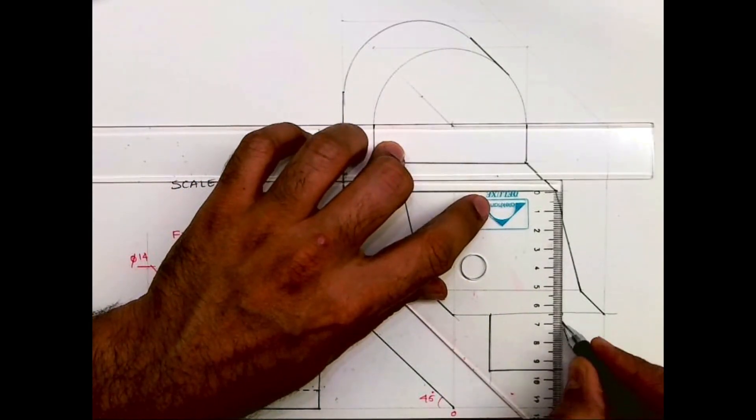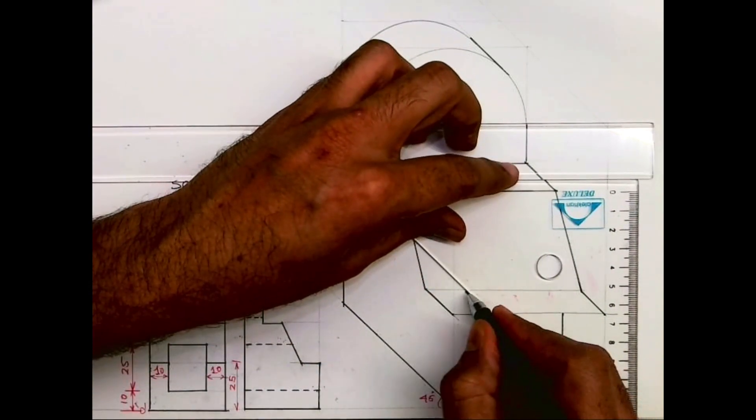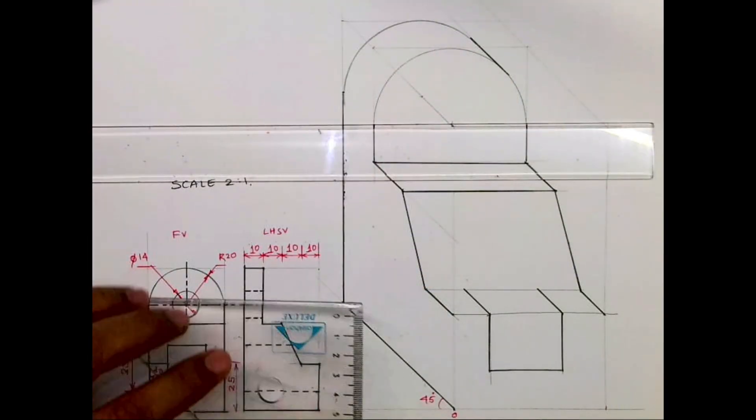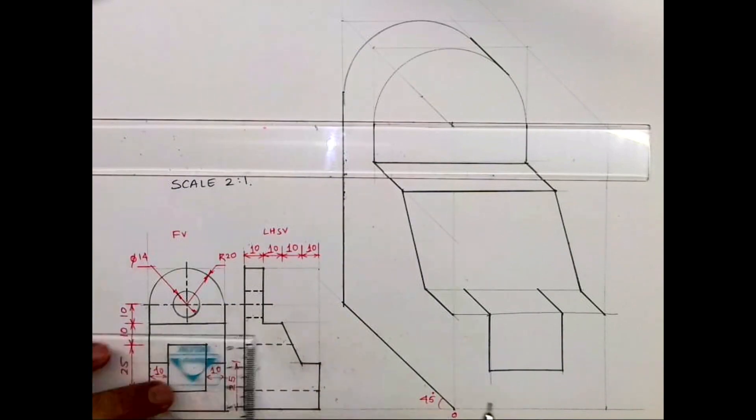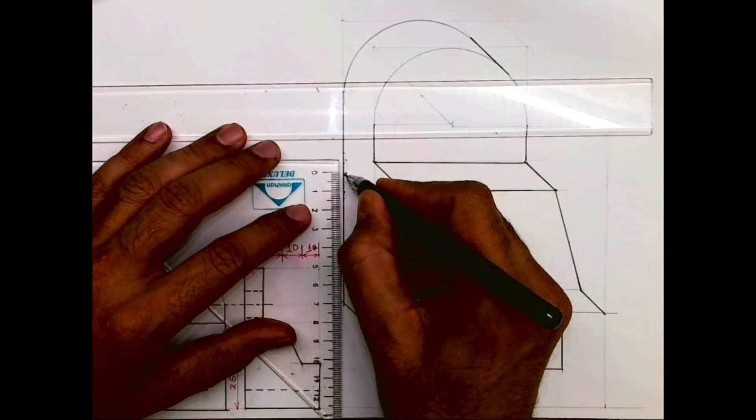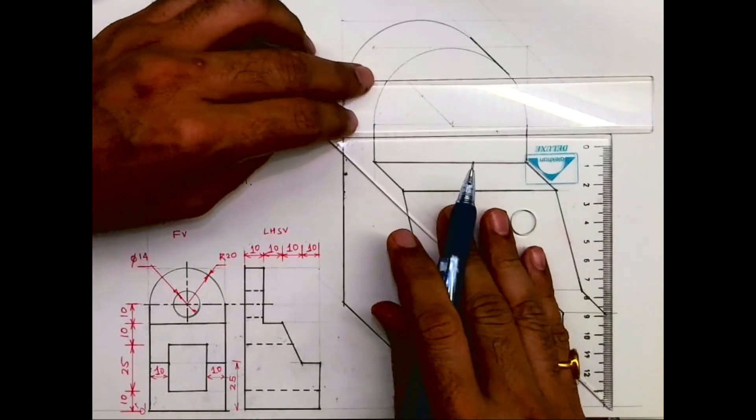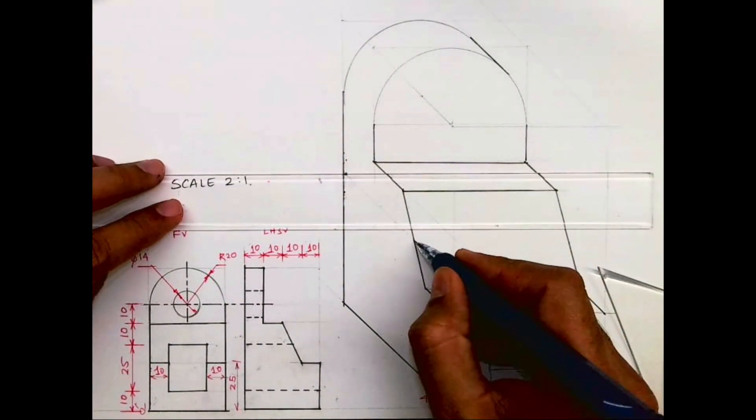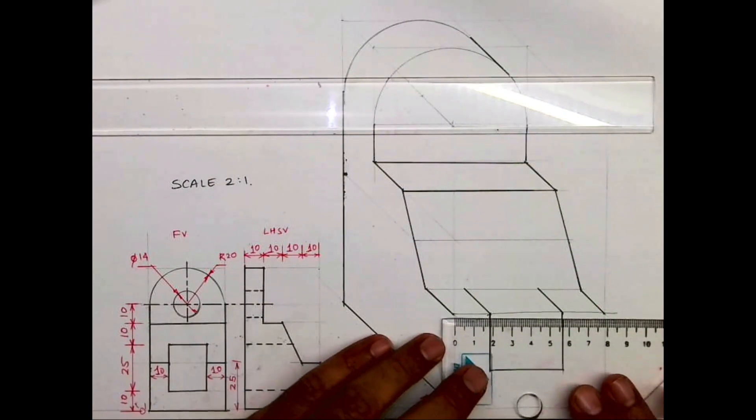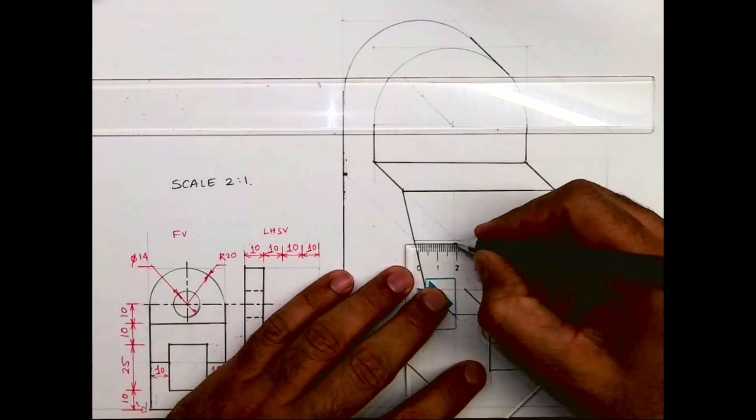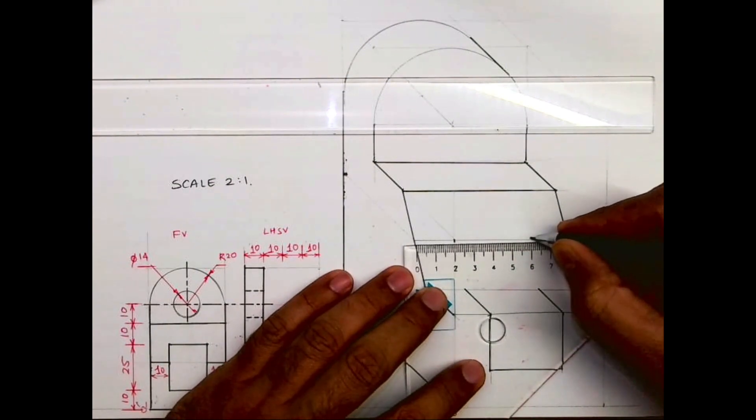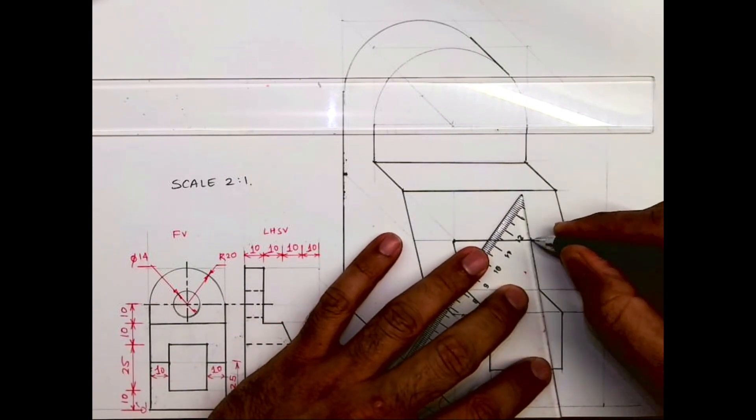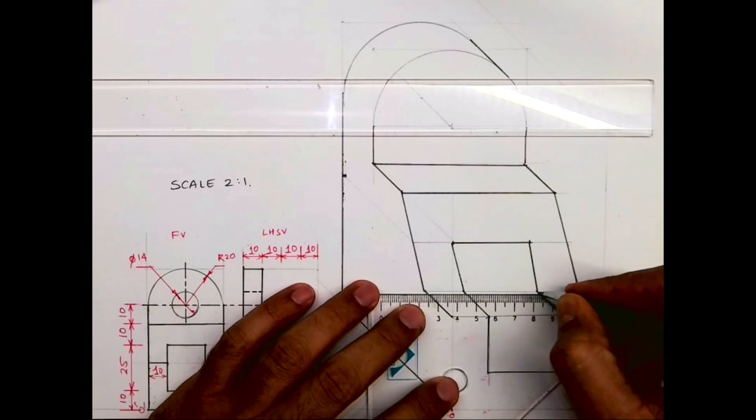Now we know that this is hollow. So we will extend this behind, and this height is how much? 10 plus 25 is 35, so 70. We will mark this point. Always remember to mark on the main box, then you transfer it on the inclined surface. So this is 20, from here also it is 20. This will be dark and this will be dark.